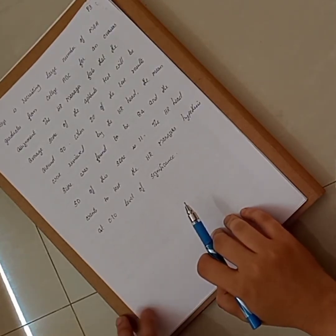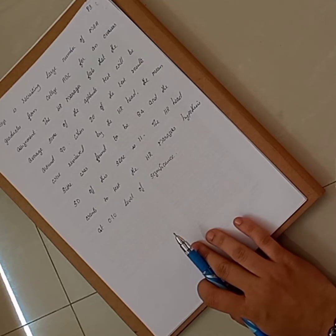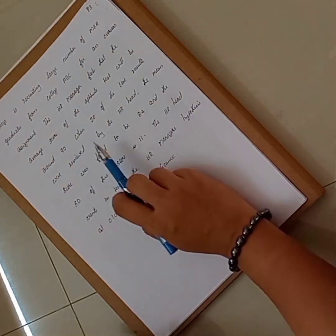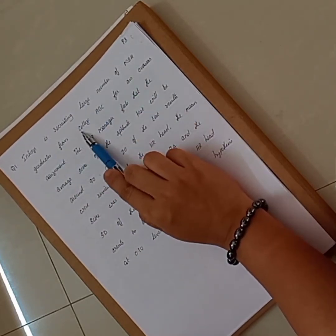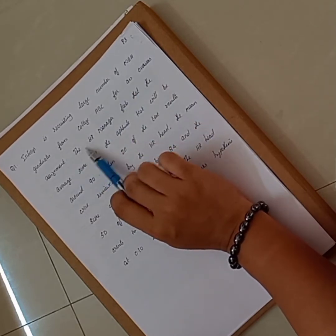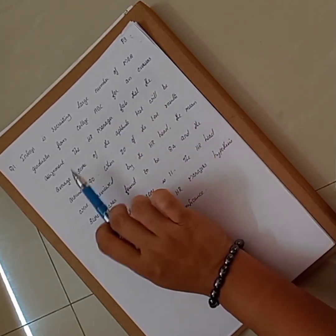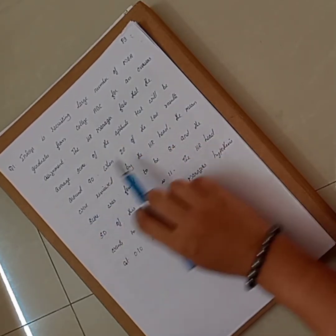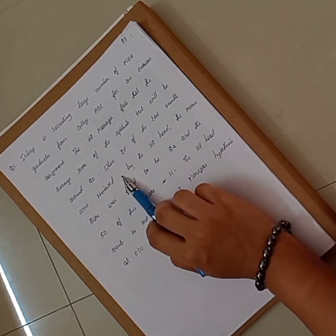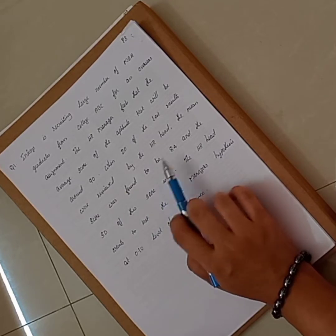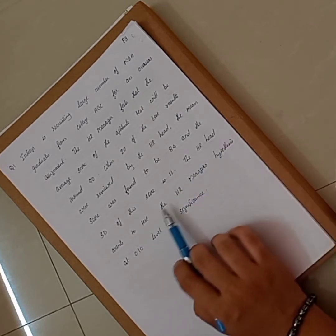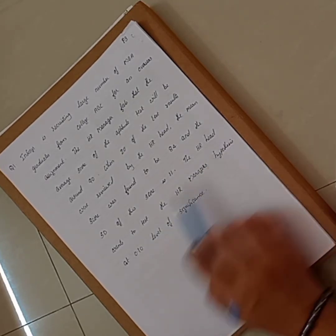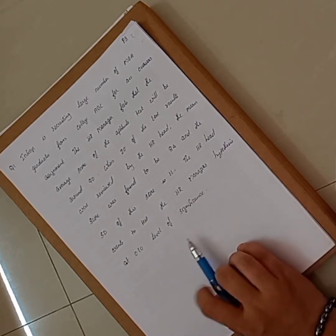Now we will discuss a particular problem to understand T-distribution better and solve a hypothesis testing using T-test. Infosys is recruiting a large number of MBA graduates from college ABC for an overseas assignment. The HR manager feels that the average score of the aptitude test will be around 90. When 20 test results were reviewed by the HR head, the mean score was found to be 84 and the standard deviation was 11.